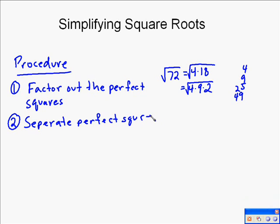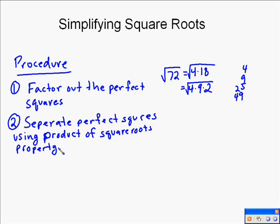Okay, so the next step is to separate the perfect squares using the product of square roots property. Which essentially means that if you've got two things multiplied together inside a square root, you can separate it into two separate square roots multiplied together. So, like the square root of six is equal to the square root of two times the square root of three. You can multiply through that square root and just put everything in the square root. And it goes both ways.